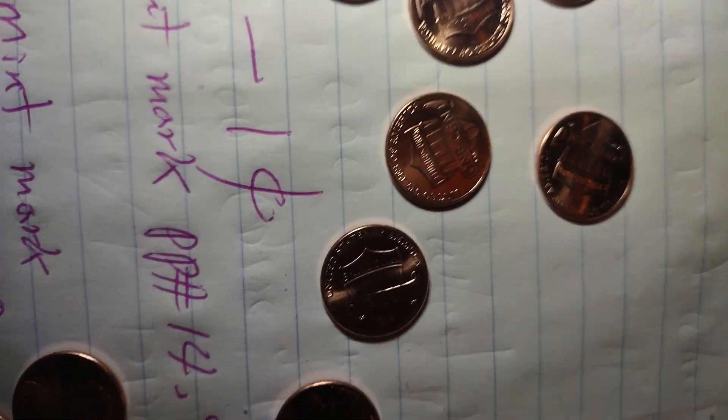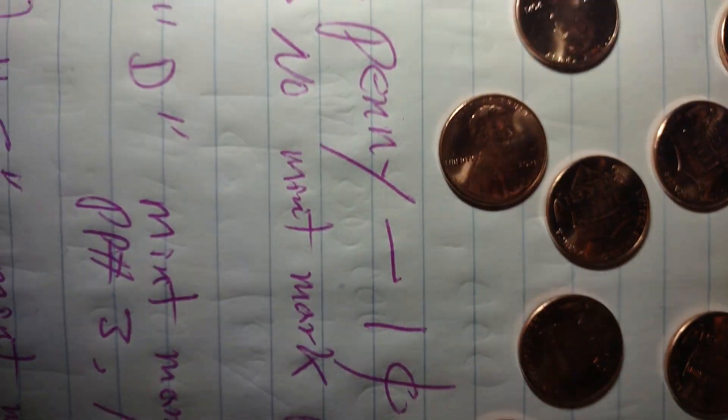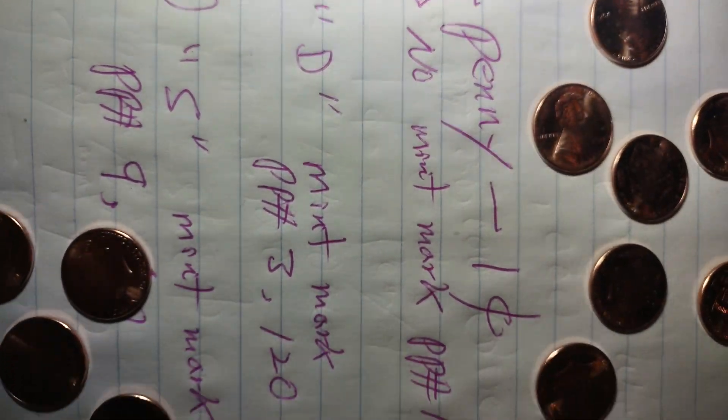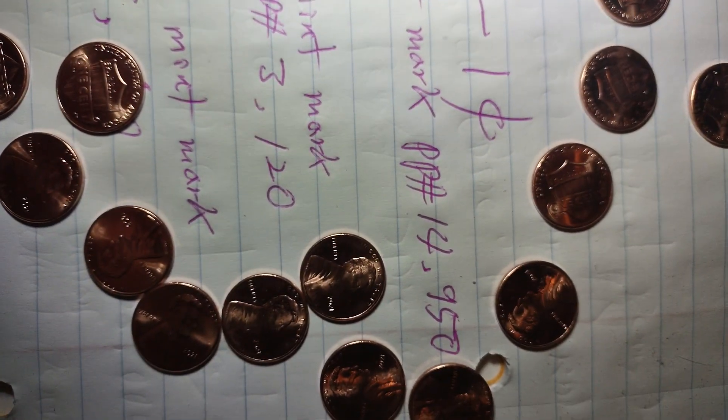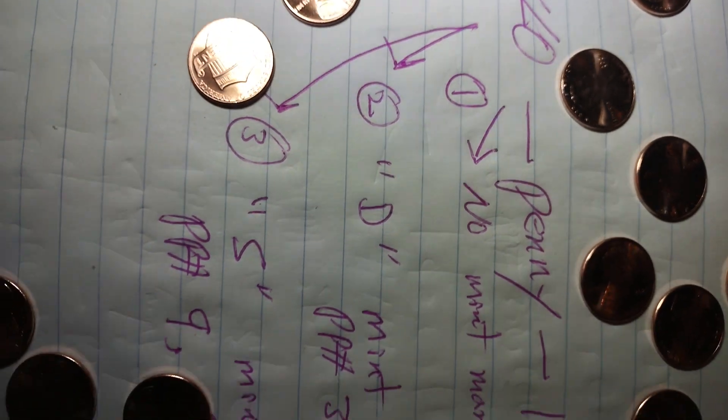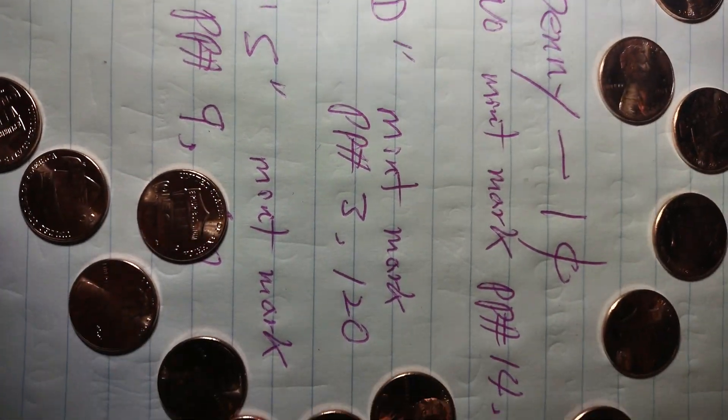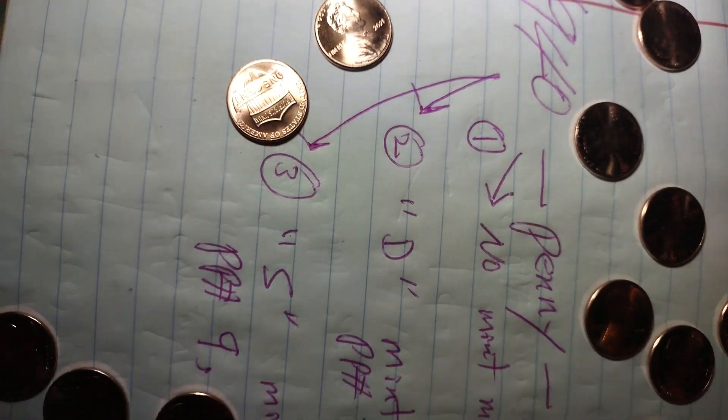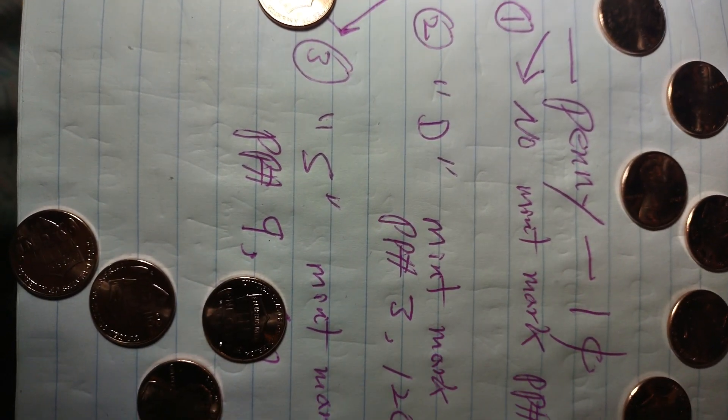A 1940 wheat penny with no mint mark is selling for $14,000. Another 1940 D mint mark is selling for over $3,000. And a 1940 S, which is for San Francisco.